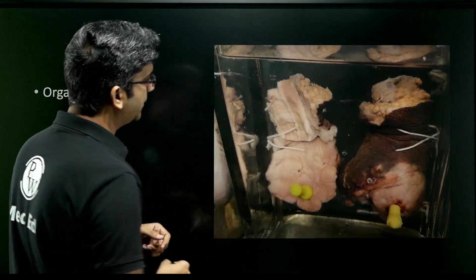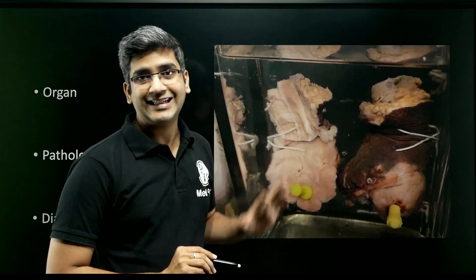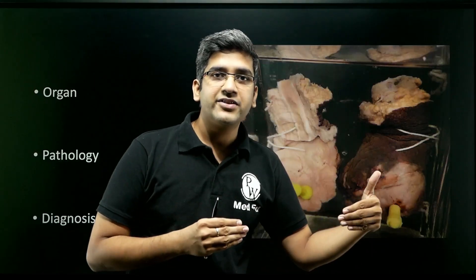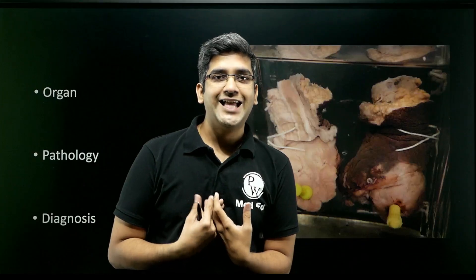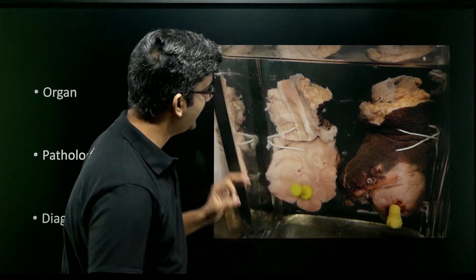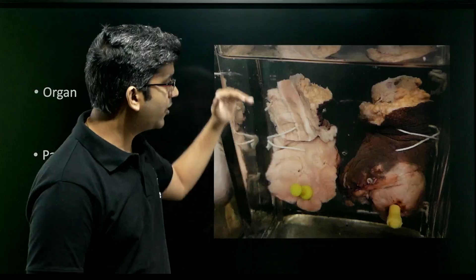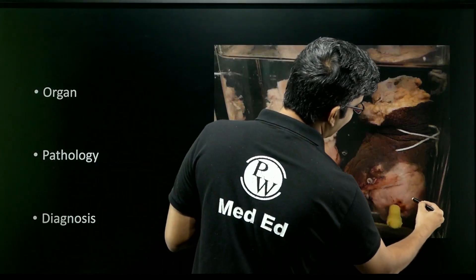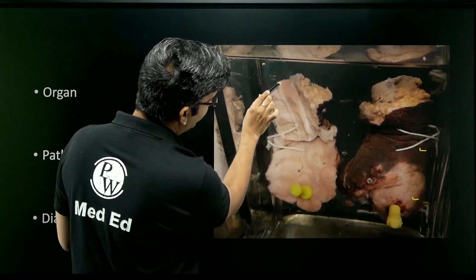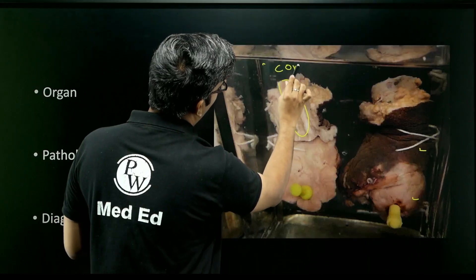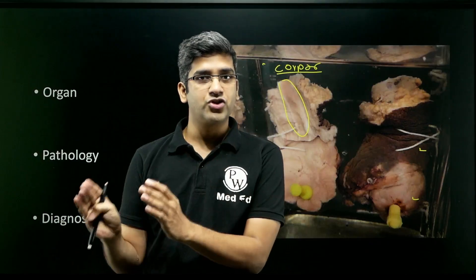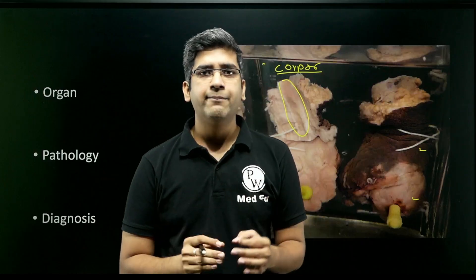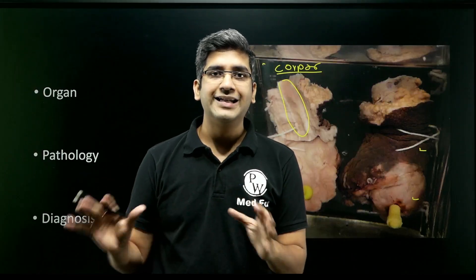The next specimen is a classical penectomy specimen. No one cuts a penis normally unless there's a problem, so it's clearly a penectomy specimen. I'm identifying it as a penis because you can see the glans penis, the overlying skin, and on the cut surface you can appreciate the corpora — corpora spongiosa and corpora cavernosa. Based on these structures, I'm confident it's a penis and a classical penectomy specimen.